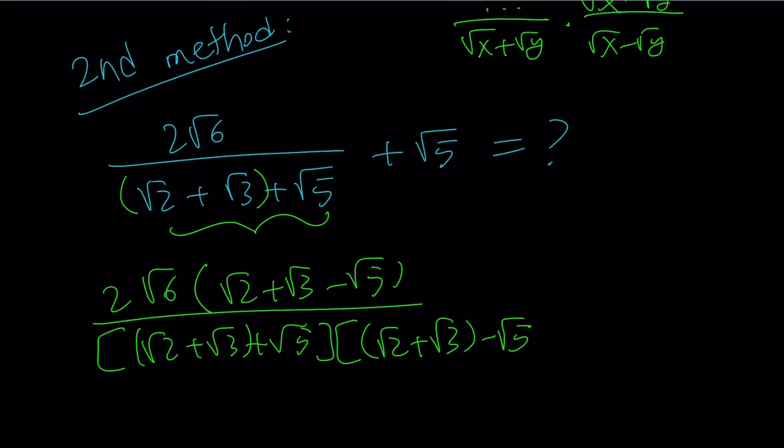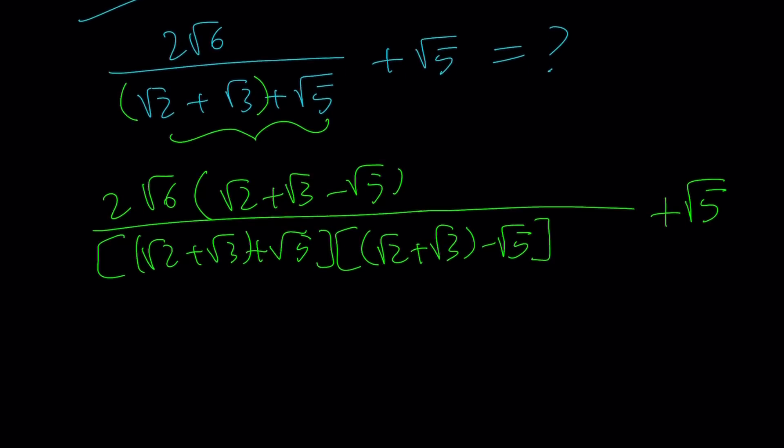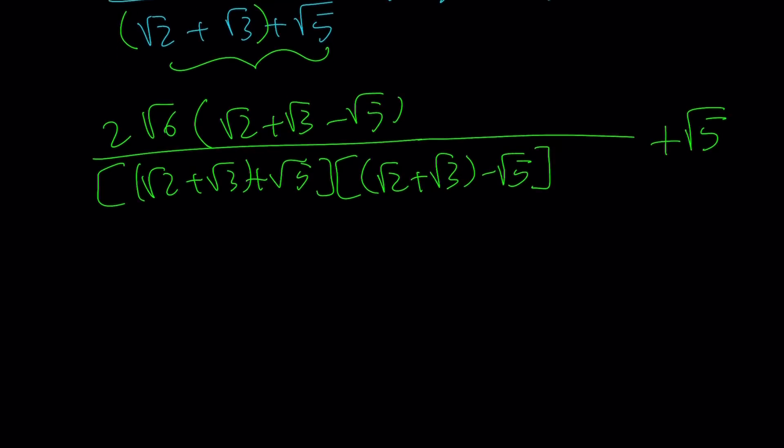So root 5, I'm going to leave it alone for now because I want to take care of this first piece first. Now, when you multiply these two things from difference of two squares, you're going to get something nice. Let me explain that a little bit. But let's write the denominator first.